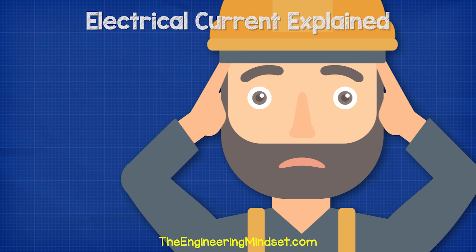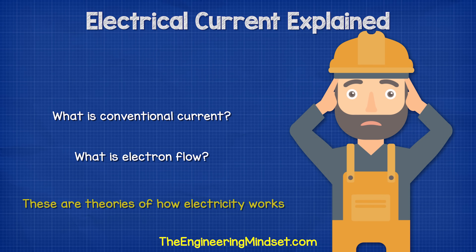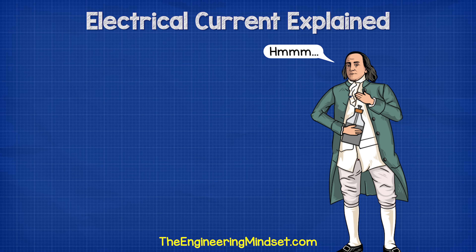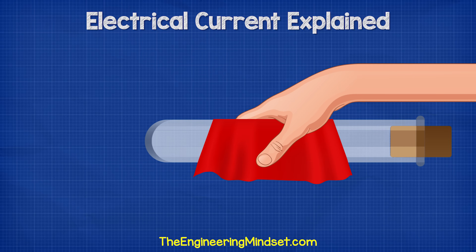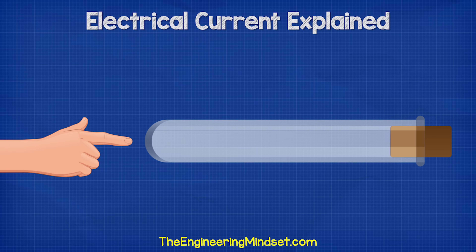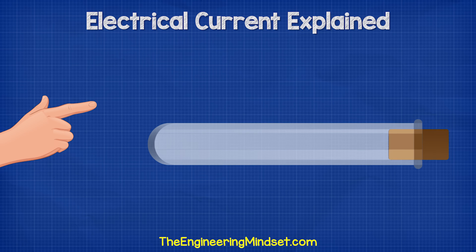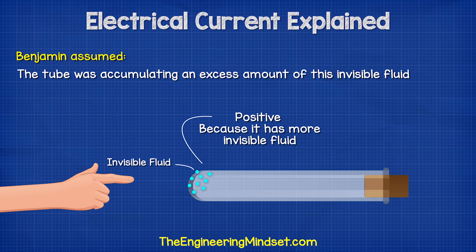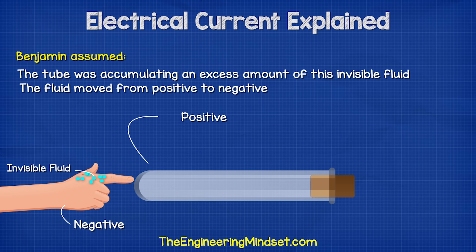Something that's going to cause you great confusion when you're learning about electricity is the difference between conventional current and electron flow. These are both theories of how electricity works. When Benjamin Franklin was first experimenting with electricity, he had the idea that something must be flowing inside the materials. He was given a glass tube, and when this was rubbed with a cloth, it seemed to accumulate this strange invisible fluid, because when someone else touched the tube, they received a small shock. We now know this as static electricity. But at the time, Benjamin Franklin assumed that the tube was accumulating an excess amount of this invisible fluid, so he considered this to be positive, and the person touching it must have less of this fluid, so they were considered negative. So he said this end is positive and this end is negative.